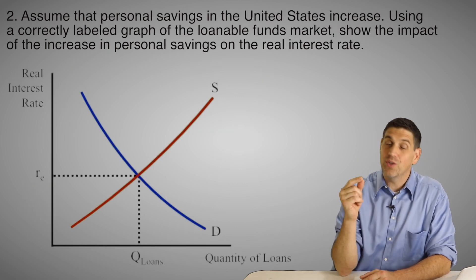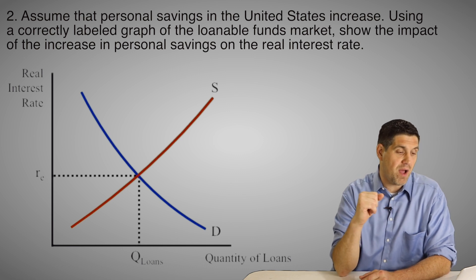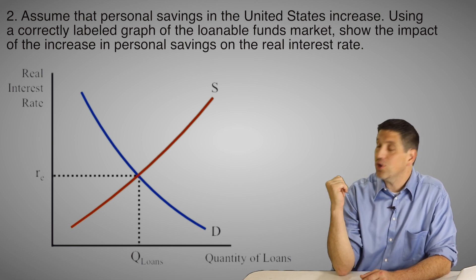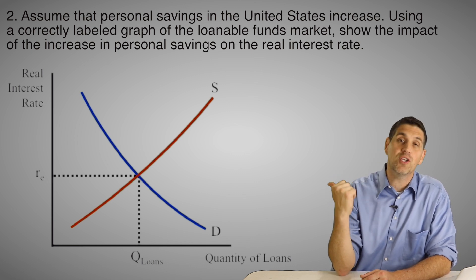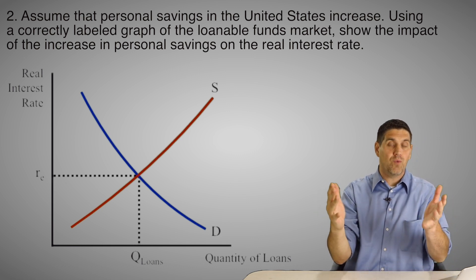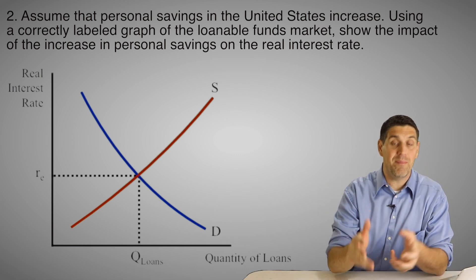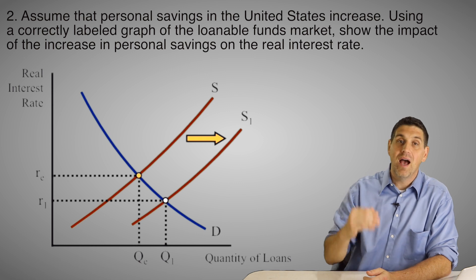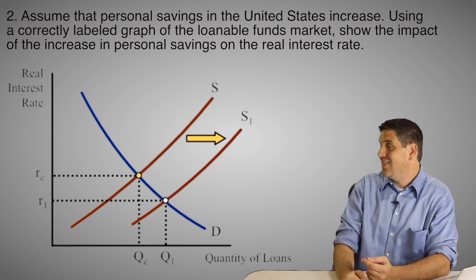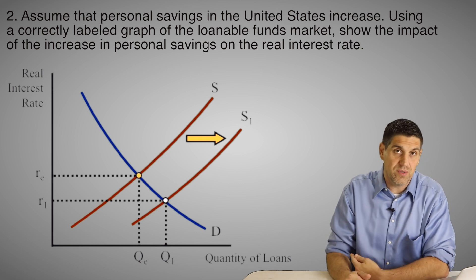For question number two, from the 2013 macro free response on the AP test, it says that personal savings increases in the United States. Remember, savings is supply. That means there's going to be an increase in supply, a decrease in the real interest rate, and an increase in the quantity of loans.